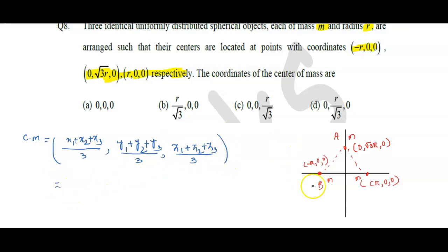We put the above given data. Here X₁, X₂, X₃ are -R, 0, R. So (-R + 0 + R)/3. Here Y₁ is 0.